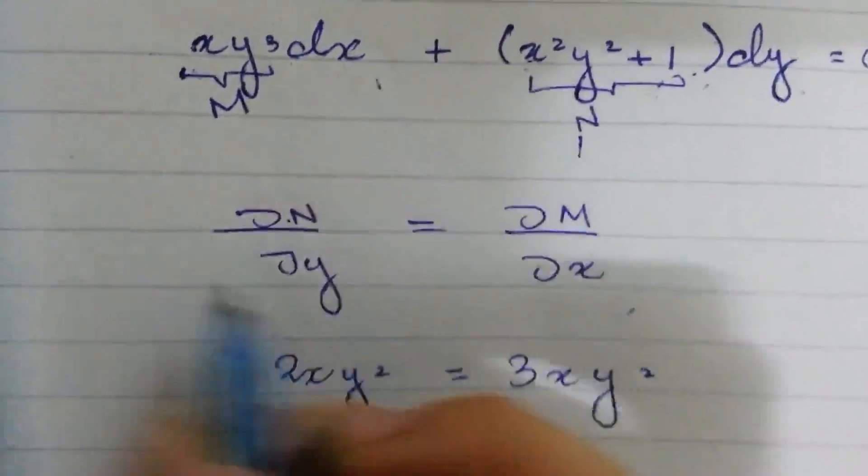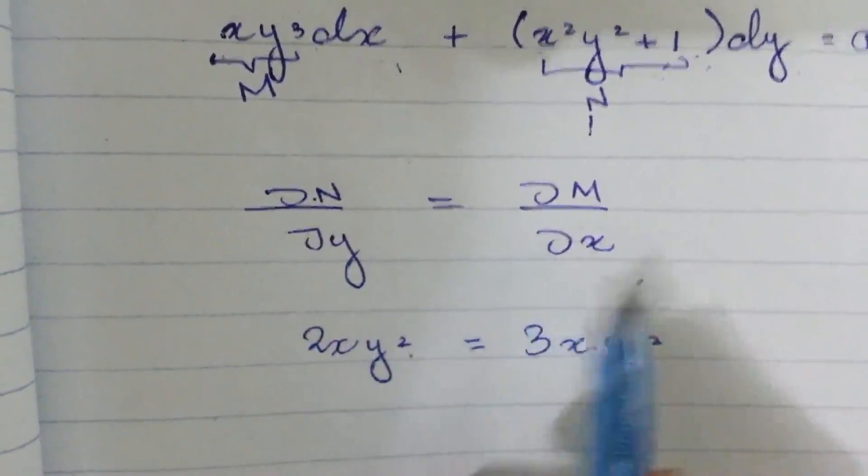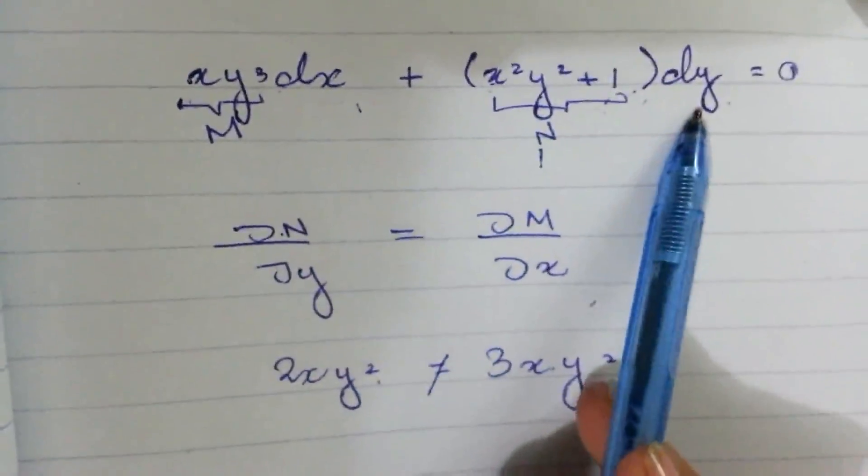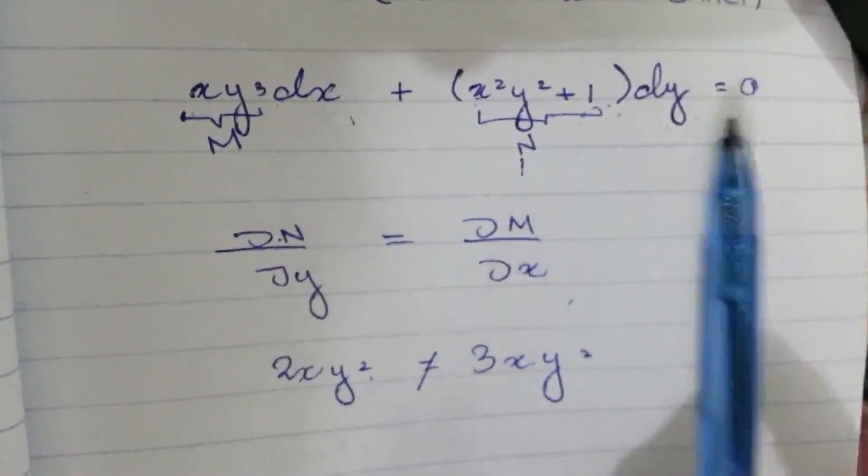The results are not equal. This means the equation is not exact. Now we must reduce it to exact form.